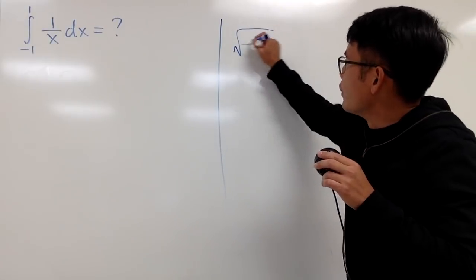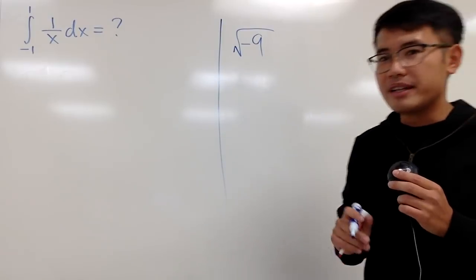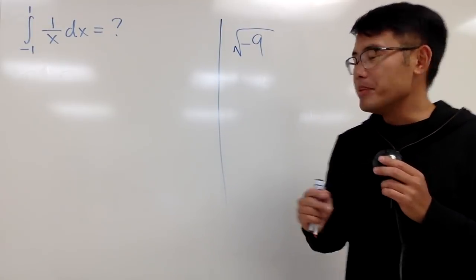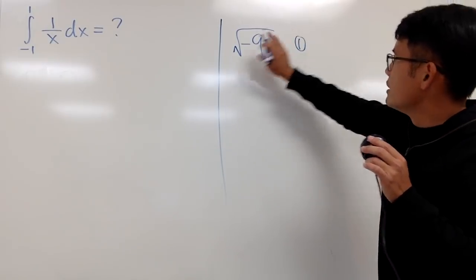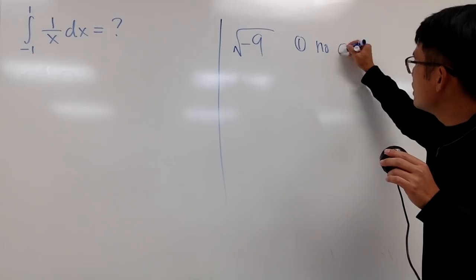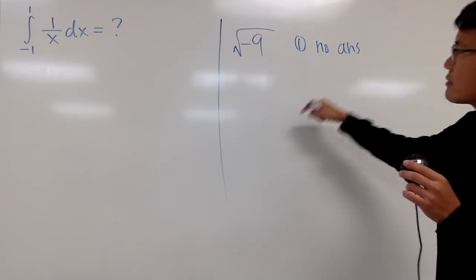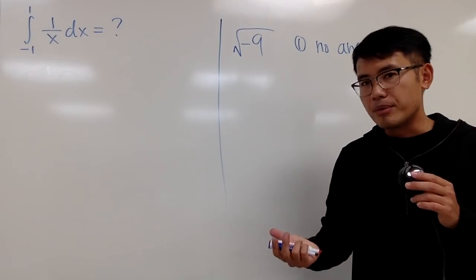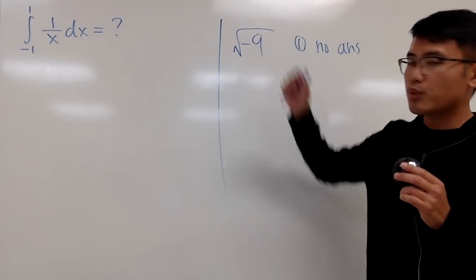Suppose I ask you, what is square root of negative 9? I believe you guys have two ways to answer this, right? The first way is that this has no answer, because there's no real number multiplied by itself that gives a negative number. You cannot have a negative number in the square root.